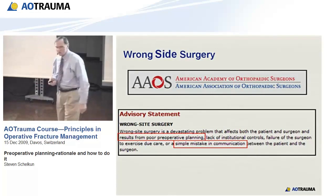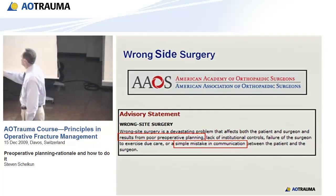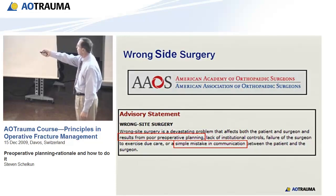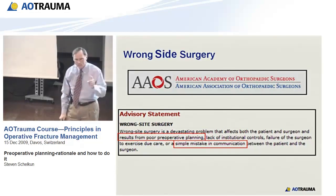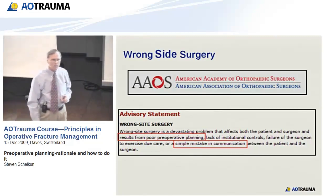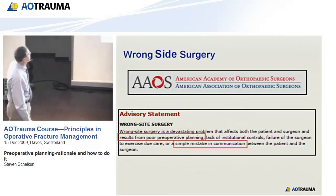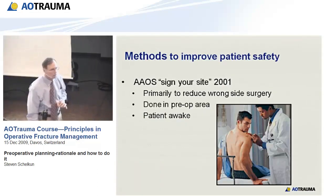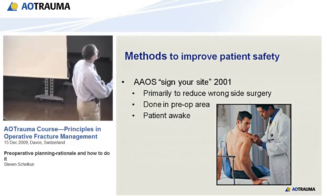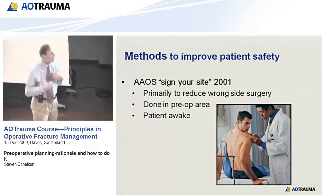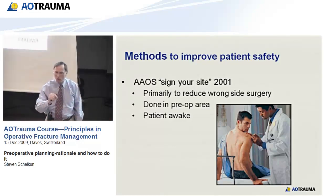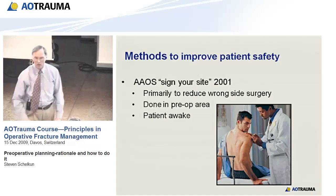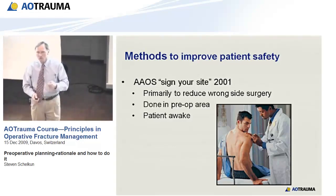In 2001, the American Academy of Orthopedic Surgeons came out with a position statement on wrong-site surgery, stating that wrong-site surgery results from poor preoperative planning and a simple mistake in communications. This can be eliminated entirely. One simple method is to sign your site — started by the AAOS in 2001. You have the surgeon go into the pre-op area while the patient is awake, agree on which shoulder you're going to operate on, take a marking pen, and write your initials on it. There's no question in the mind of your patient, yourself, or your team.